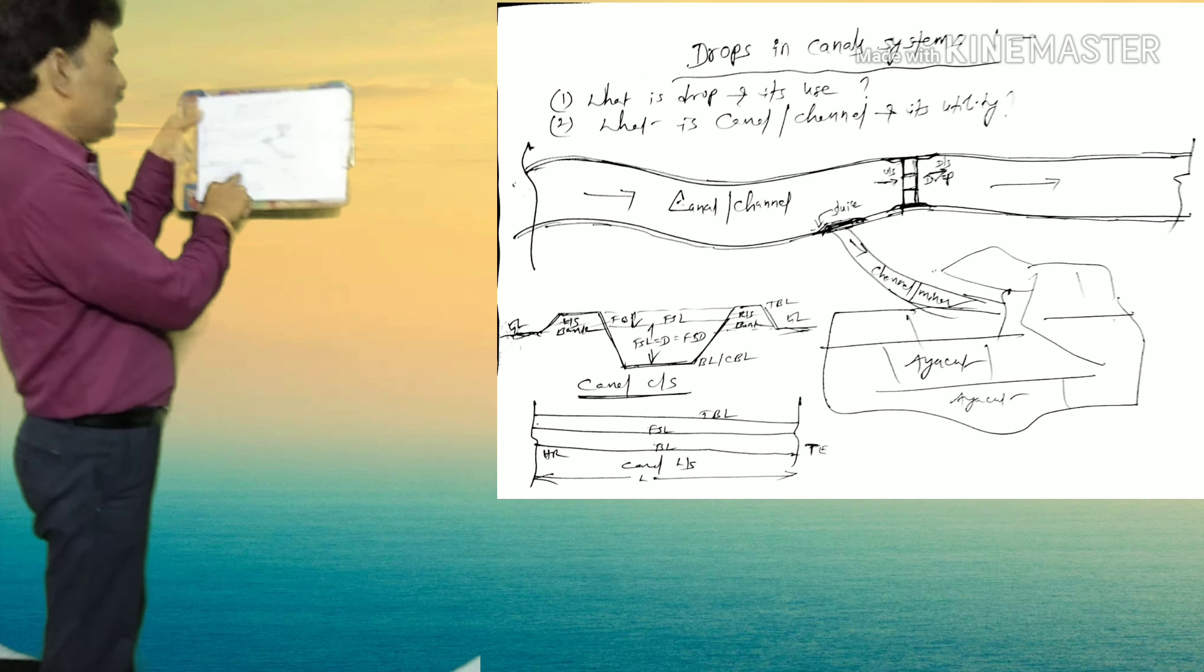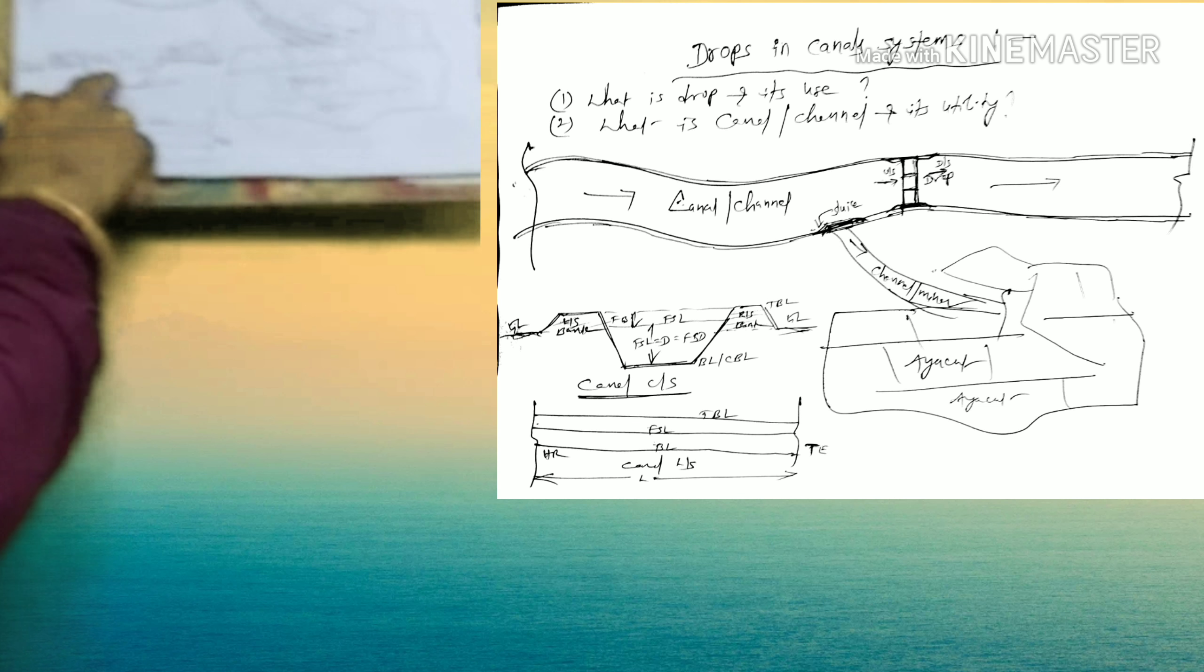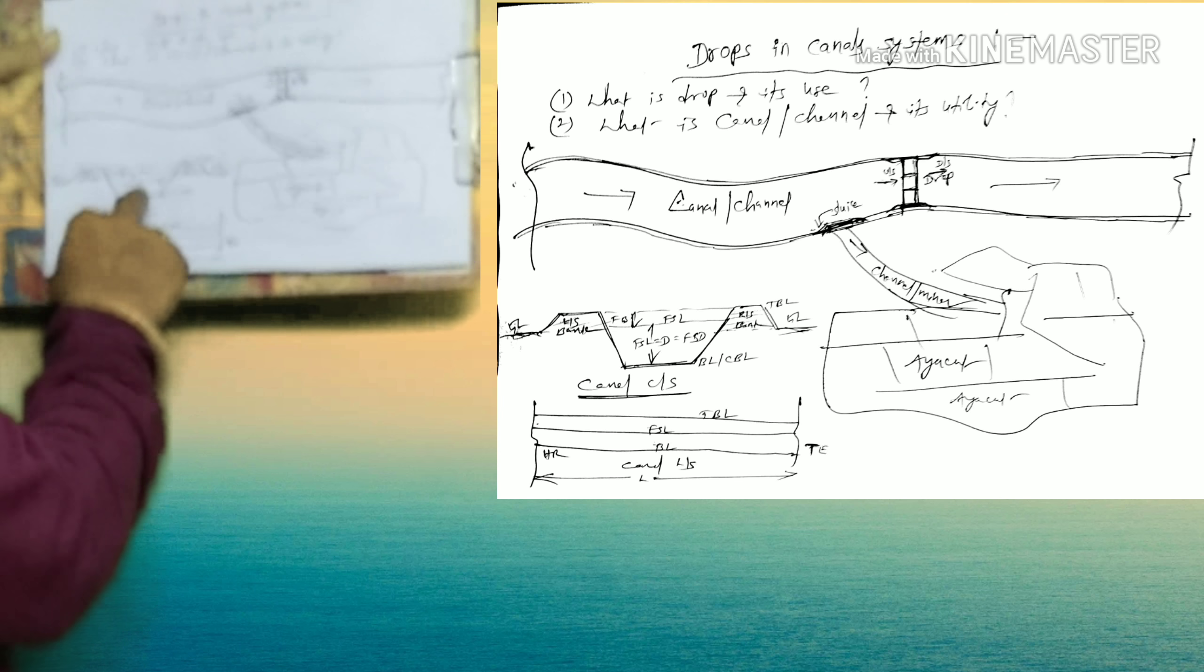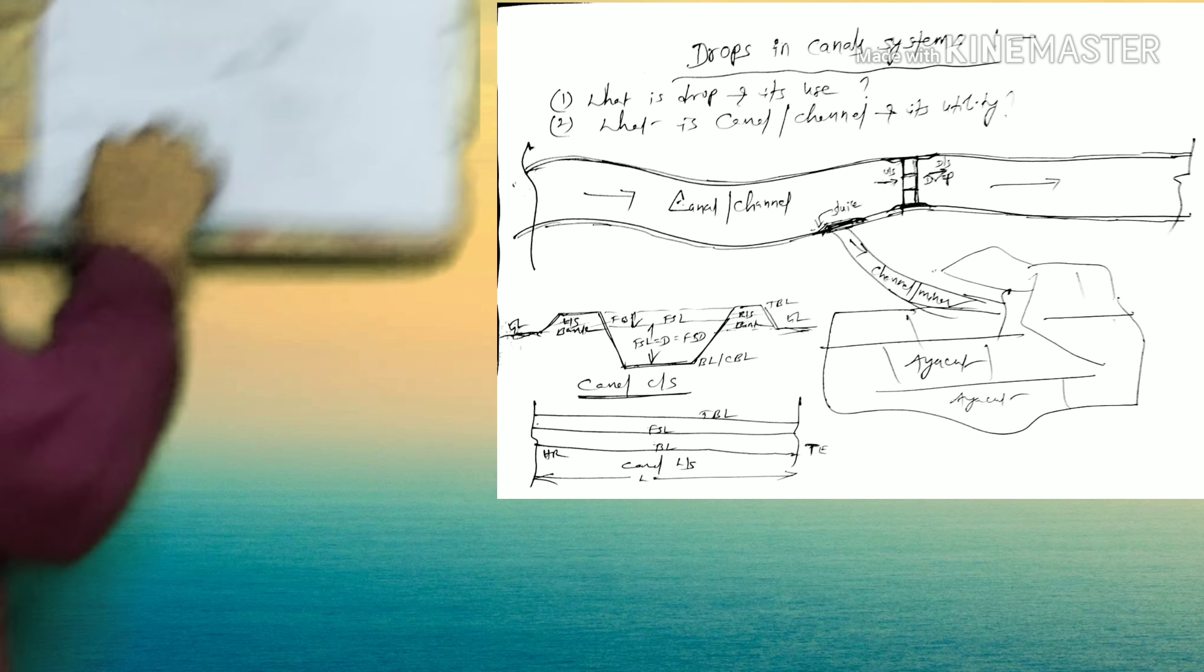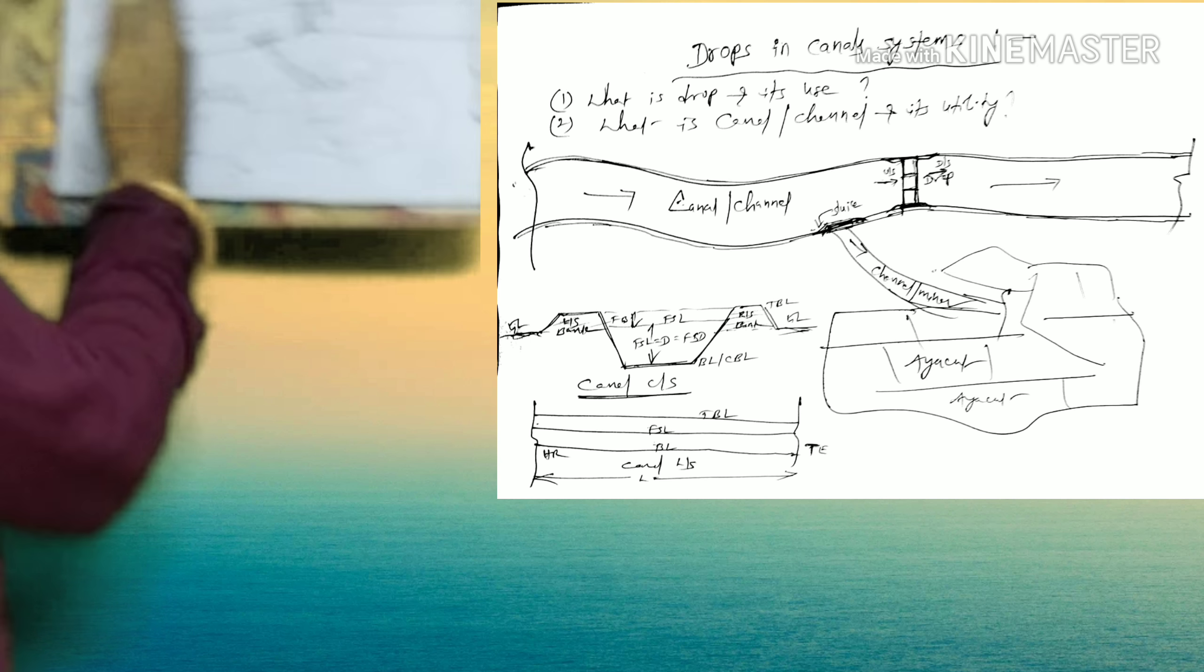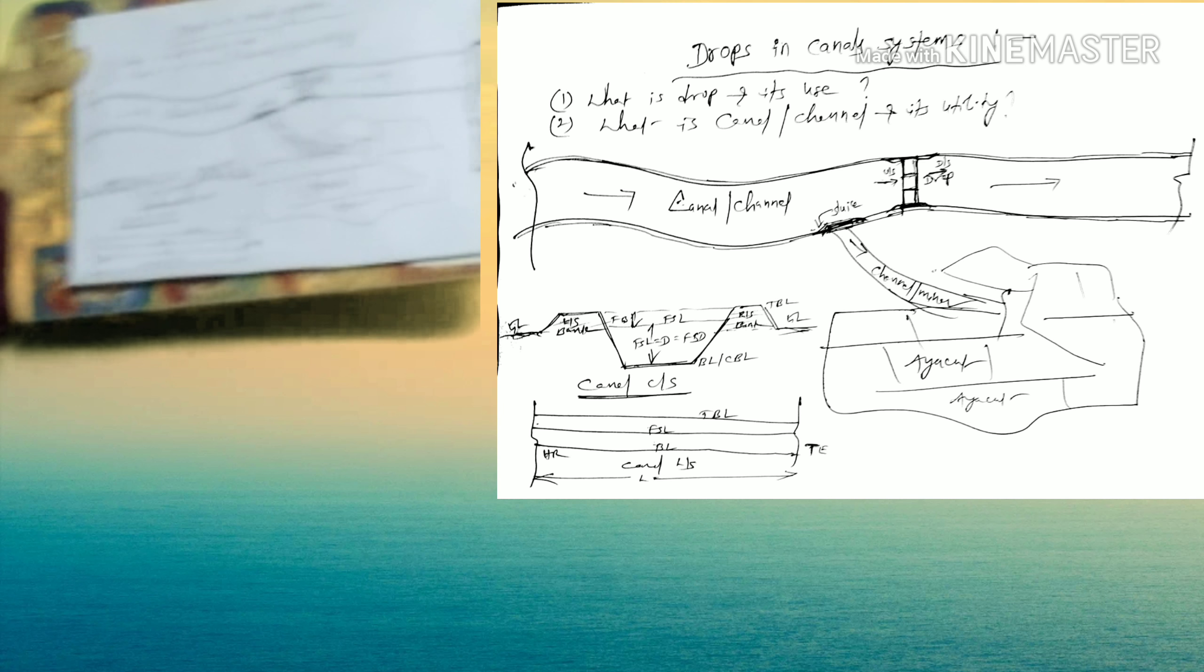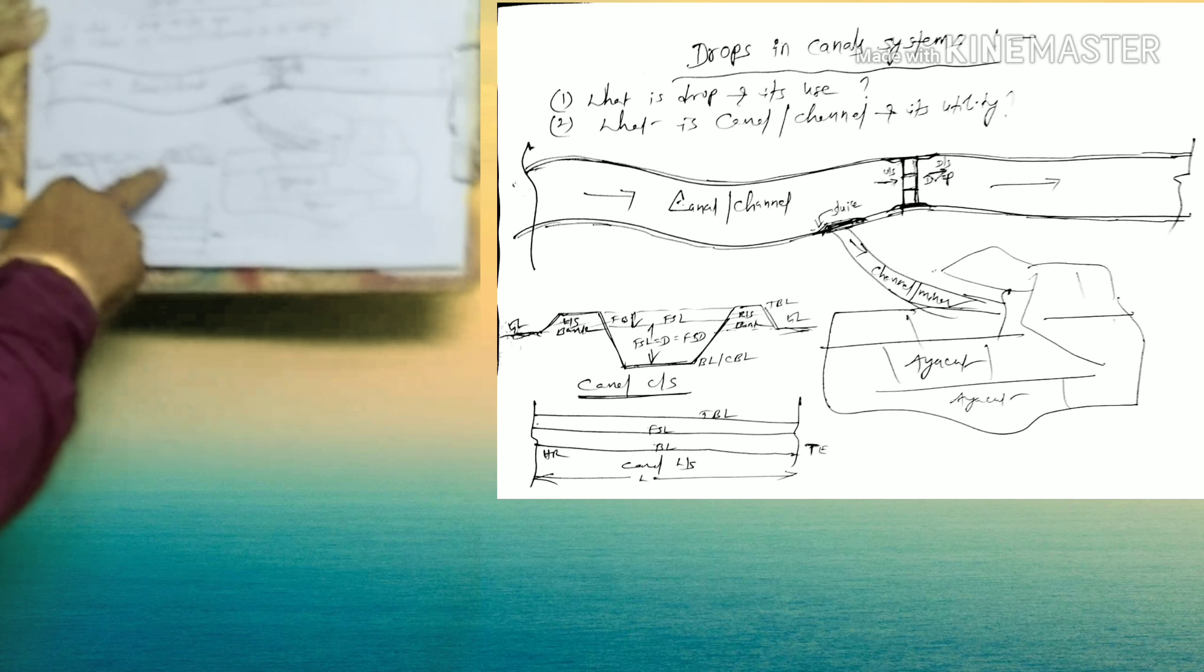Here, BL means bed level, or CBL, canal bed level. D, which you add to FSD, FSD means full supply depth, FSL means full supply level. And here, this is FSL full supply level, this is top bank level, right side bank, left side bank. And without levels, it is impossible and difficult to excavate the canal.